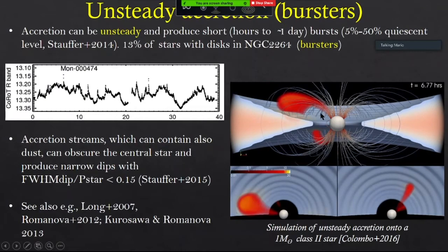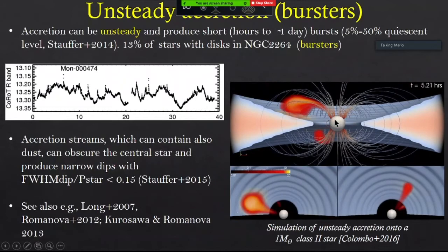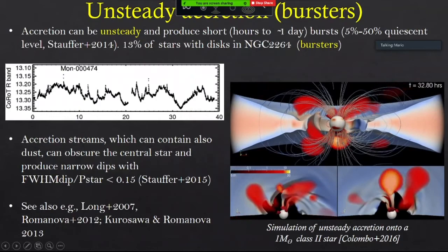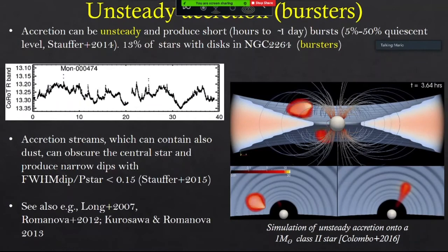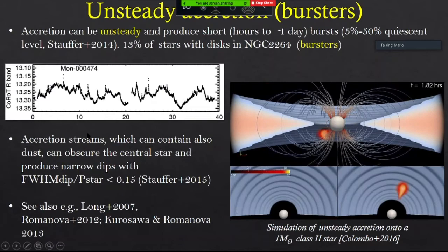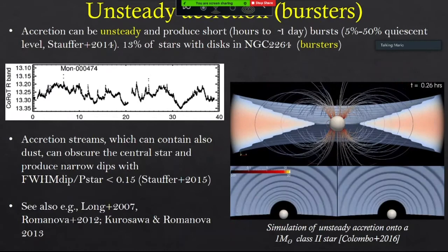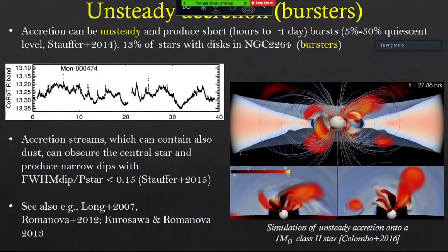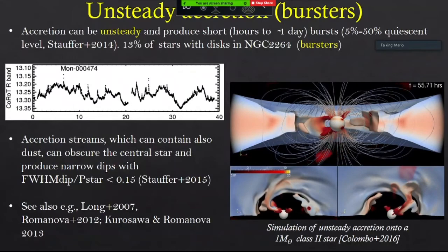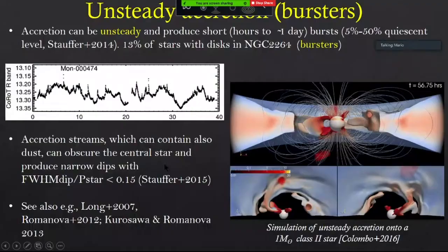Accretion can also be unsteady. These are very nice simulations by Colombo and collaborators showing a pre-main sequence star accreting from its disk in an unstable regime — you can see accretion funnels turning on and off, and the accretion spots modulated by stellar rotation. Looking at the top view, the structure of the inner disk is completely modified by the unstable accretion. The light curve produced by this phenomenon looks like an optical light curve with very narrow spikes called accretion bursts. We can also have variable extinction due to very narrow gas or dust flows infalling onto the star, producing very narrow dips with FWHM-to-rotation-period ratio smaller than 0.15.